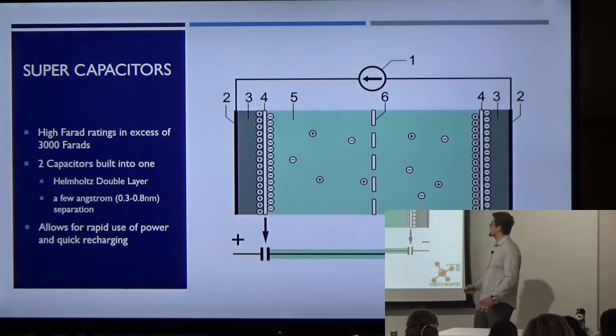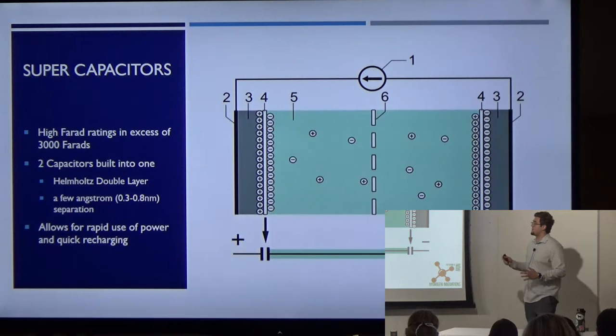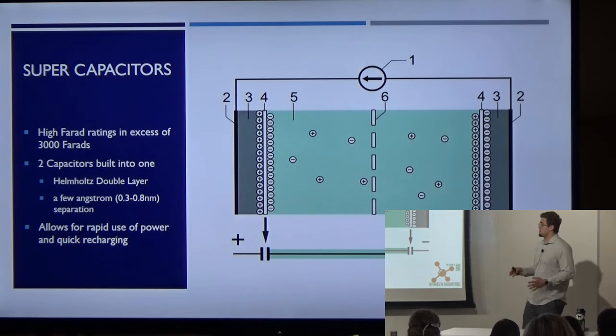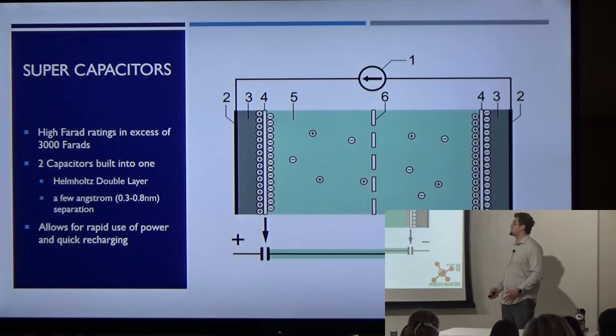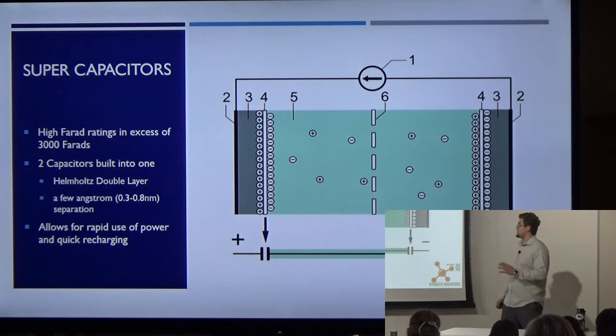Supercapacitors, another relatively simple thing. Here's the basics of what you need. Supercapacitors have a high Farad rating in excess of 3,000 Farads is what you can achieve. Farad is a measure of your capacitance. They are essentially two capacitors built into one, allowing for quick recharging and rapid use of power. The way they work is they have a double Helmholtz layer, which is as thin as a few angstroms thick. This just means you have your ions lined up in a row, but not quite touching. As soon as these ions make contact, they run.